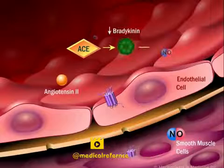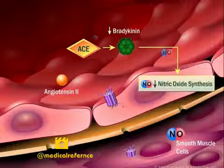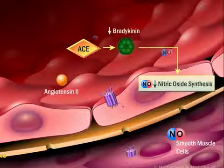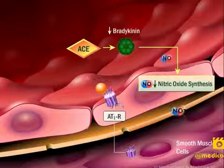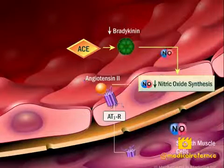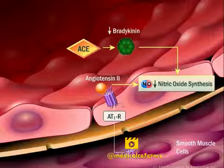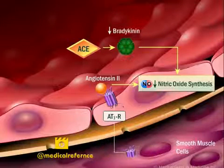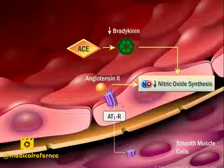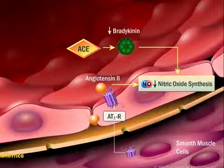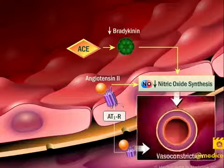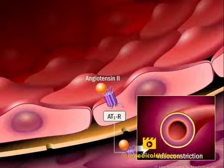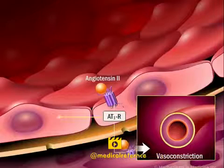Angiotensin converting enzyme also degrades bradykinin, which is required for synthesis of a major vasodilator, nitric oxide. Angiotensin 2 binds AT1 receptors expressed on the surface of vascular endothelium and impairs nitric oxide synthesis. The reduced bioavailability of nitric oxide, combined with the stimulation of AT1 receptors on smooth muscle cells, causes vasoconstriction.